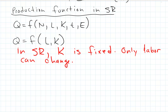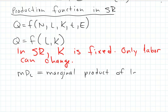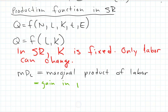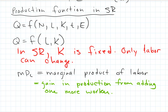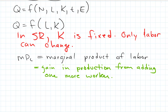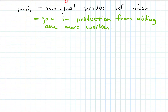We're going to walk through this with a simple numerical example. There's something called the marginal product of labor — that is how much extra production we get if we add a worker. So it's our gain in production from adding one more worker. That's going to be an important idea here. Let's walk through an example first, and then we'll come back to the general idea.